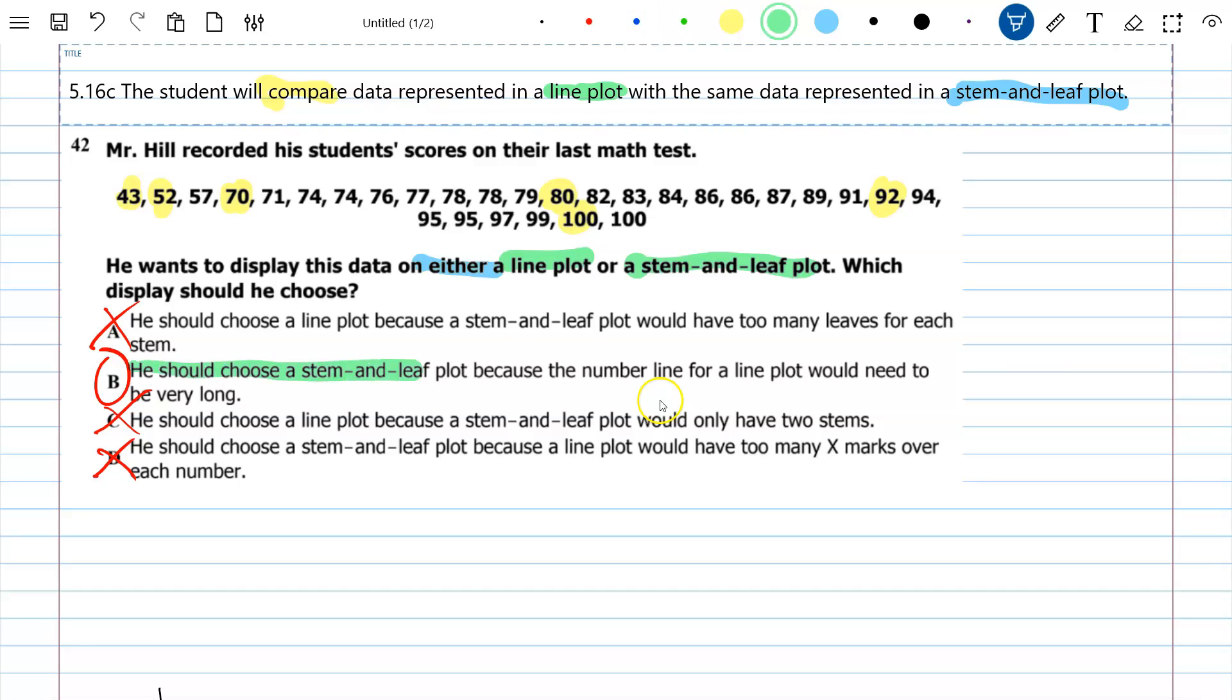So, that's why B was our correct answer. He should choose a stem and leaf plot because the number line for a line plot would need to be very long. It would just be out of control. And I'd have a lot of wasted space. All right, there you go. That was number 42.